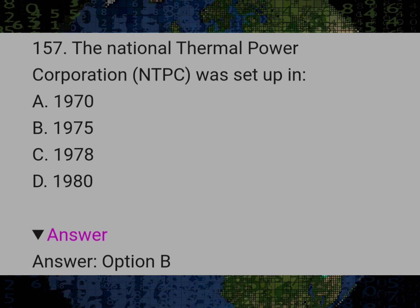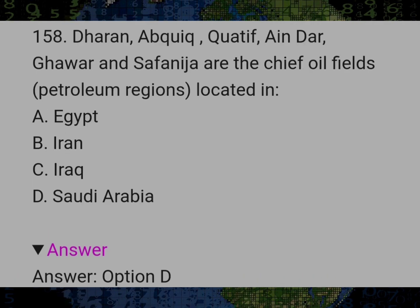The National Thermal Power Corporation was set up in? Answer B: 1975. Dharan, Abqaiq, Katif, Andhar Gawar and Safania are the chief oil fields and petroleum regions located in? Answer D: Saudi Arabia.